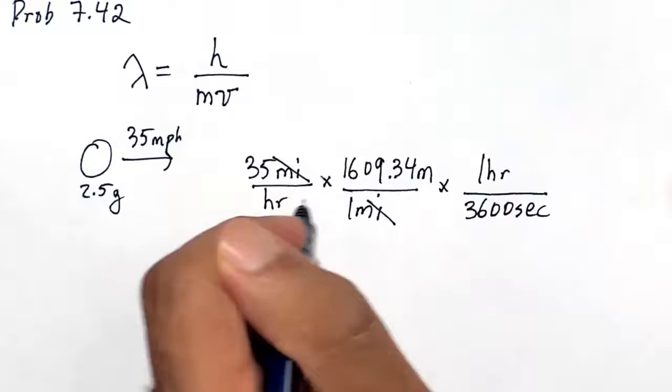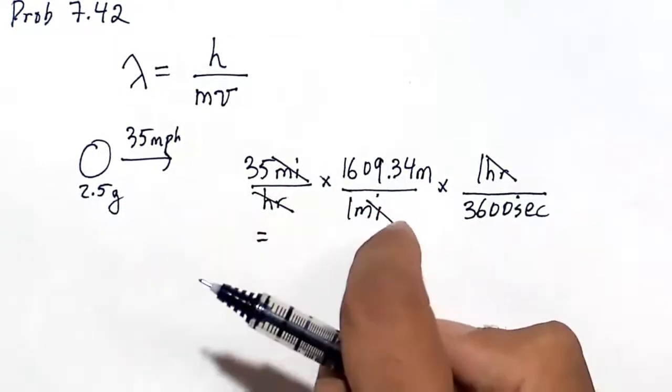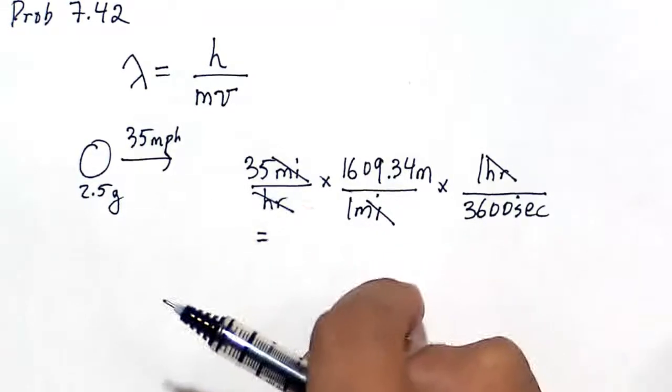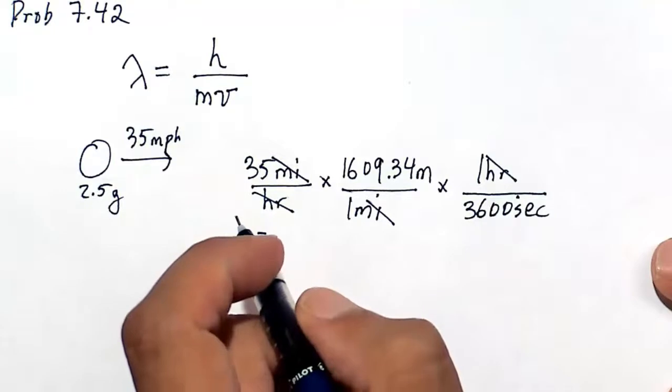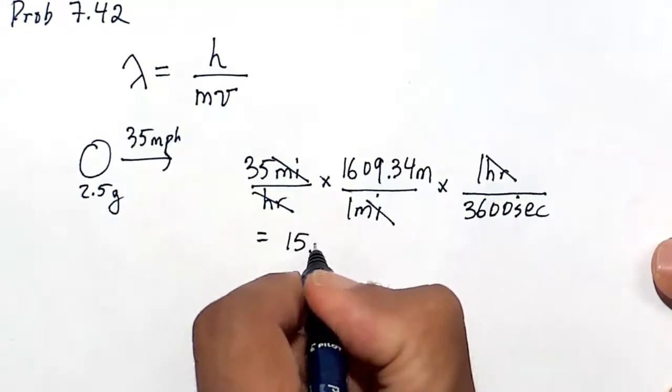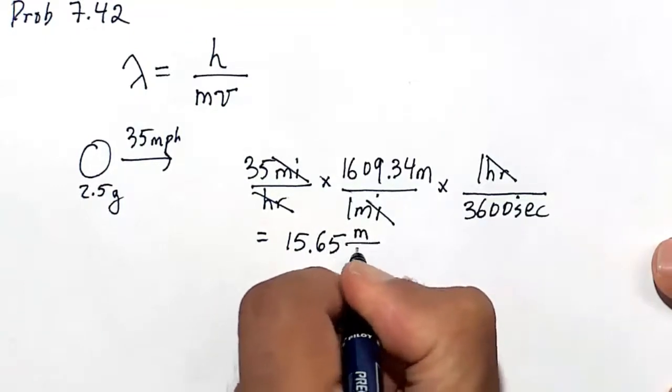I'm converting miles per hour to meters per second. The miles cancel, the hours cancel. So 35 times 1,609.34 divided by 3,600 gives us the answer in meters per second. This ping-pong ball is traveling at about 15.65 meters per second.